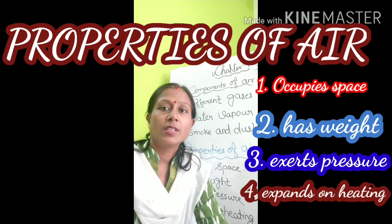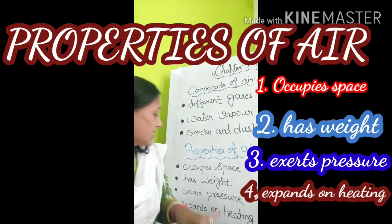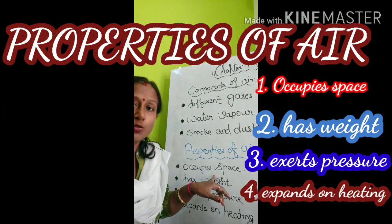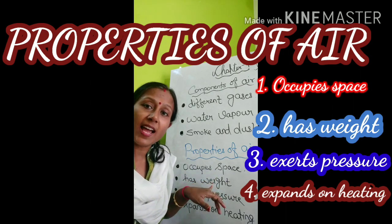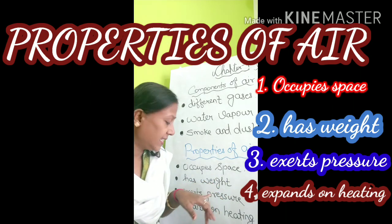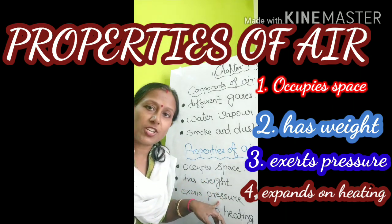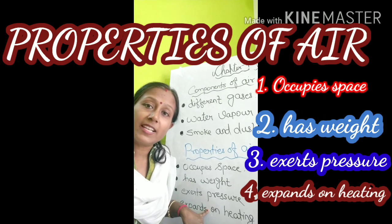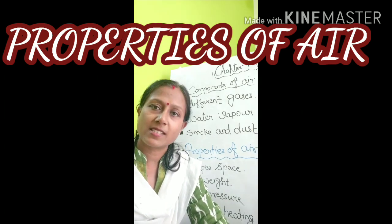So the four main properties of air are: first, air occupies space; second, air has weight; third, air exerts pressure; and fourth, on heating air expands.